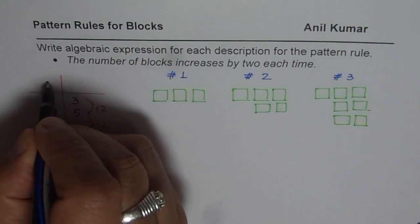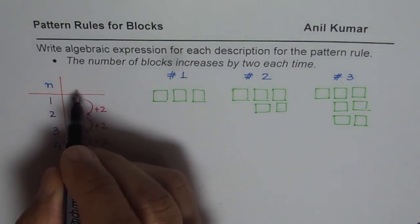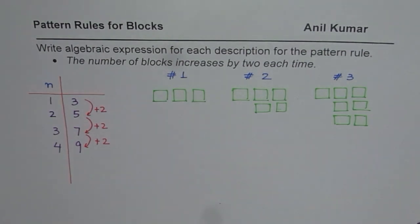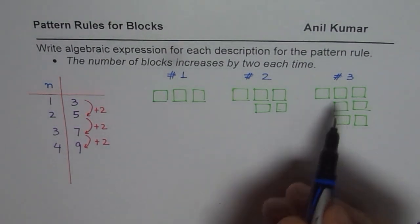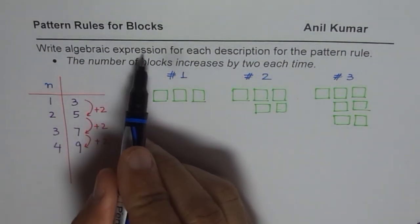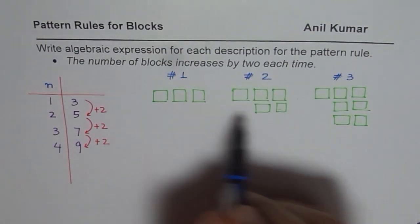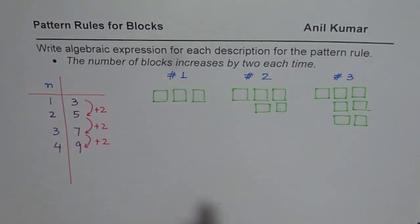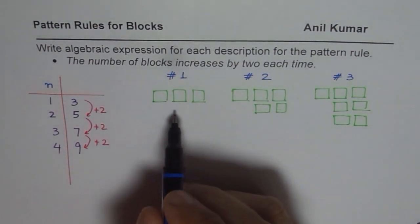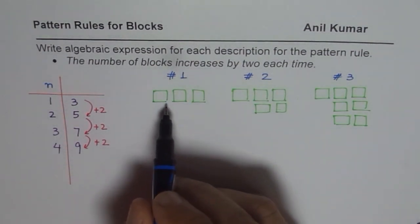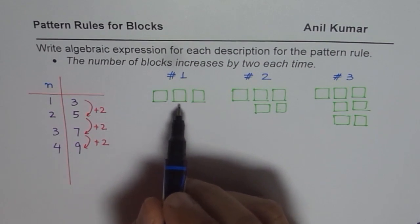So this is the number of figure. What do we need to do? We need to write an algebraic expression in terms of figure number to describe this pattern. So how can you do that? What you can think about is you can relate something with fixed and something with variable.